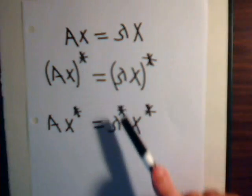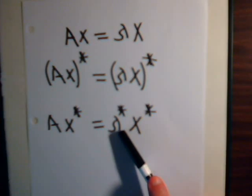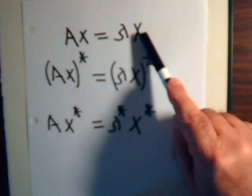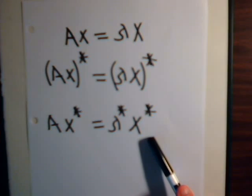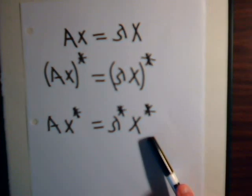We have an eigenvalue. Here is its complex conjugate. Here is its eigenvector. And here is its complex eigenvector.